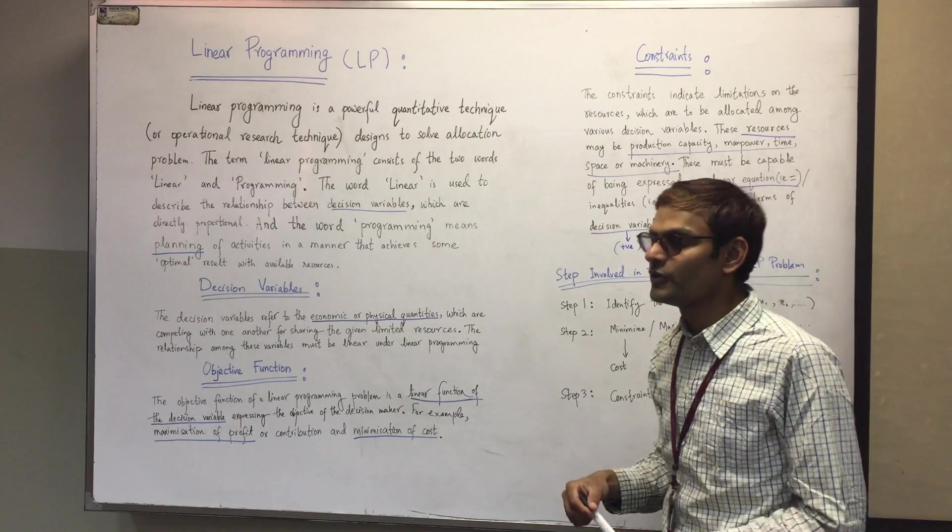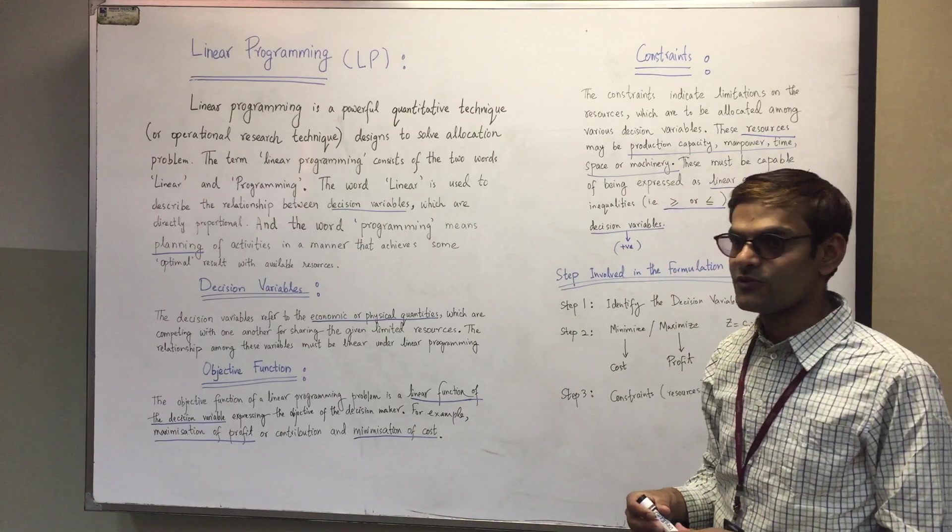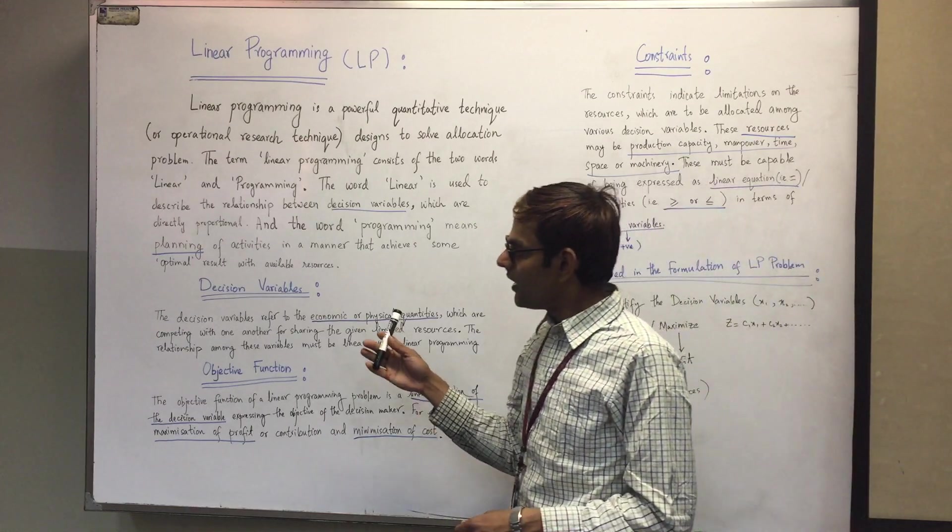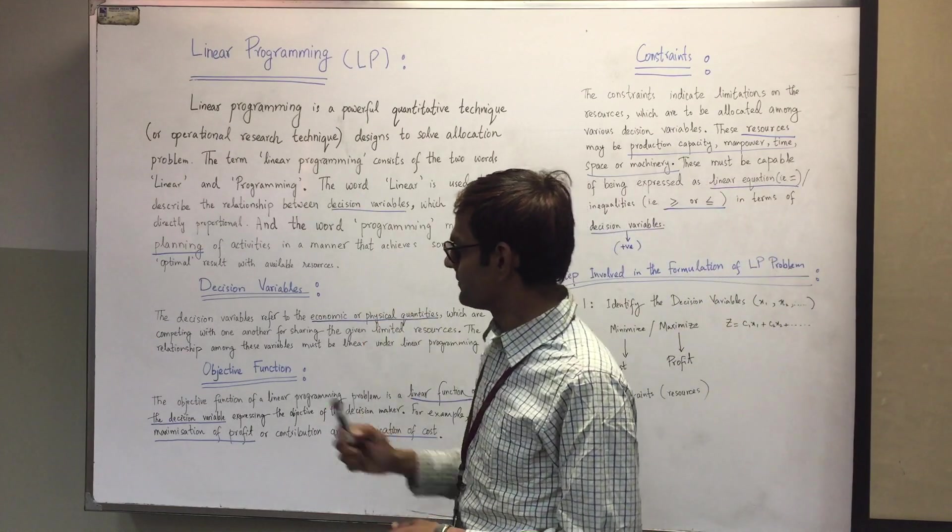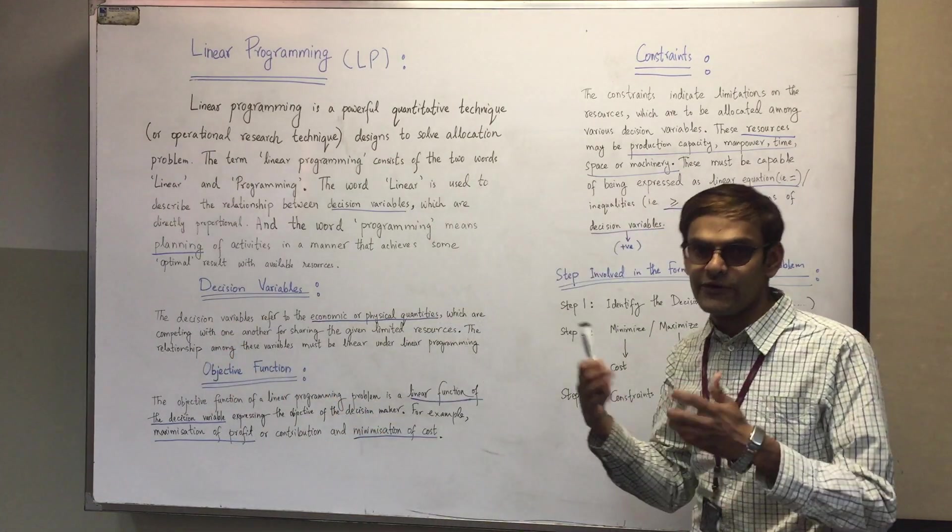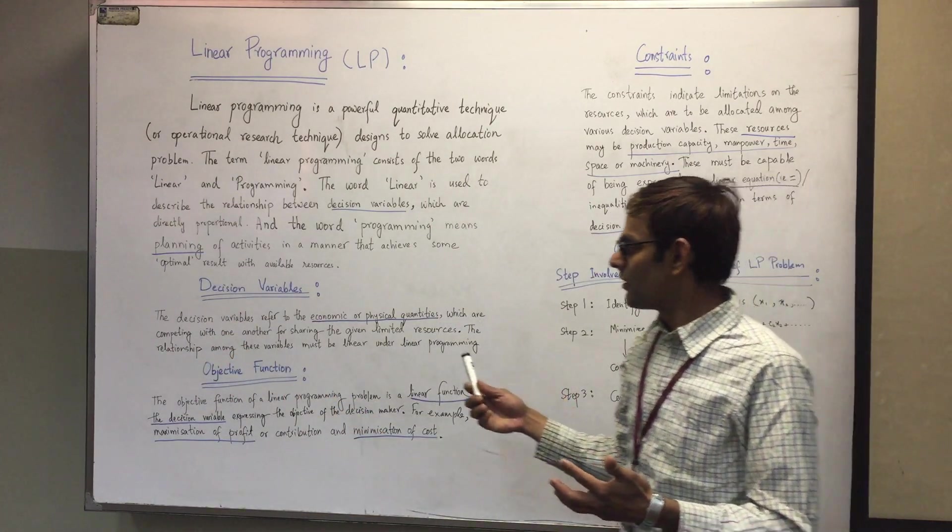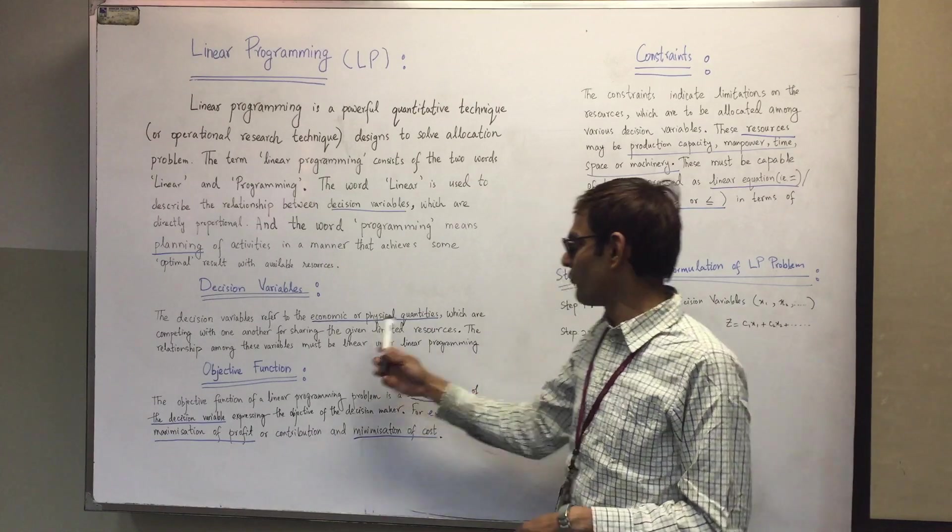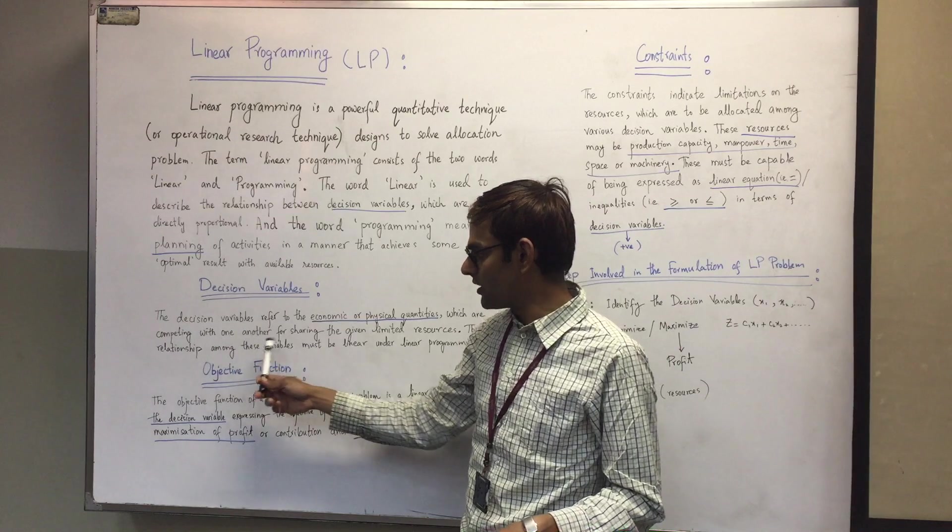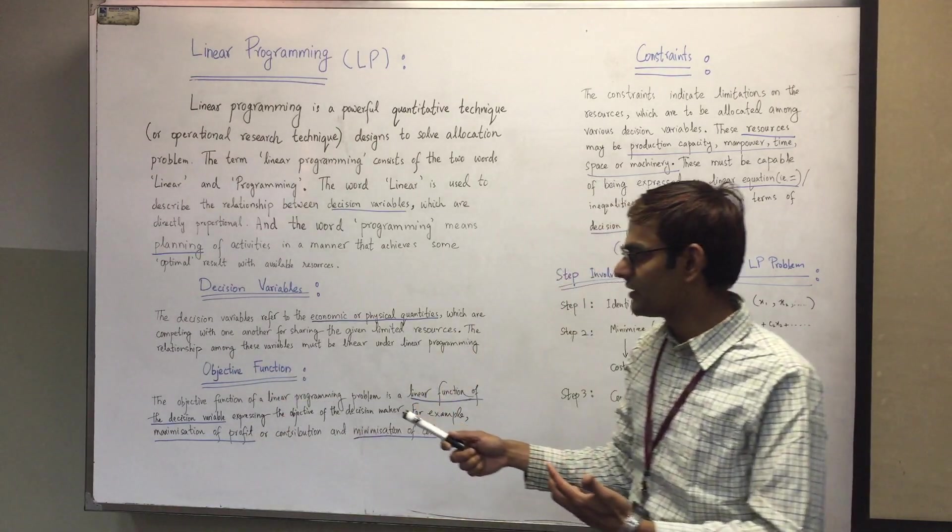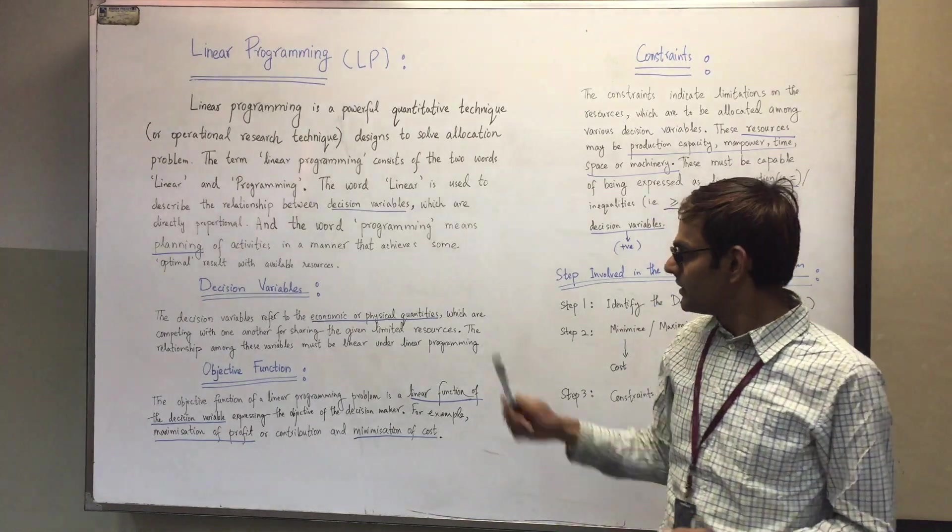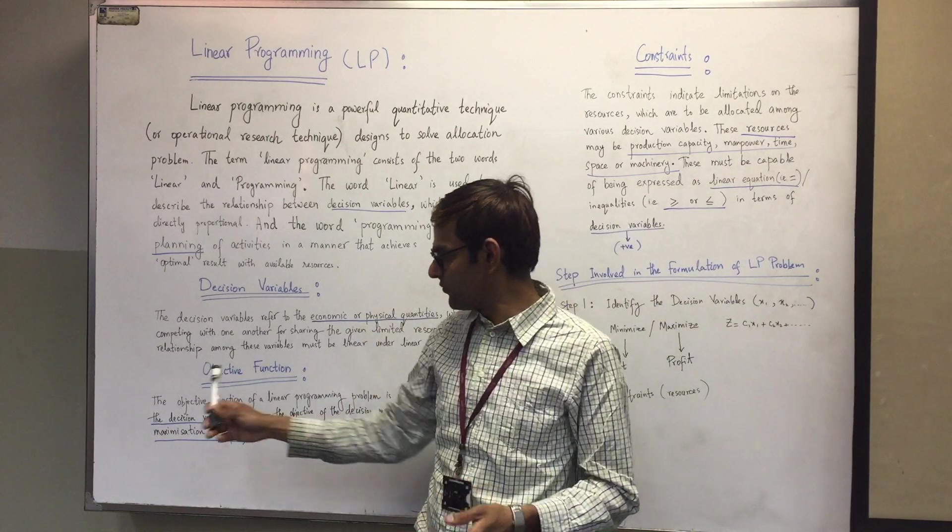Decision variables refer to economic or physical quantities which compete with one another for sharing the given limited resources. The relationship among these variables must be linear and uniform.